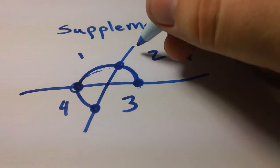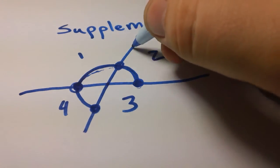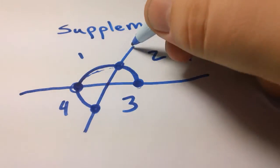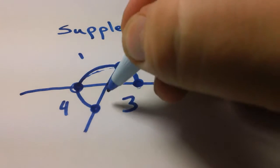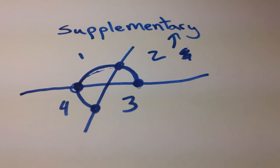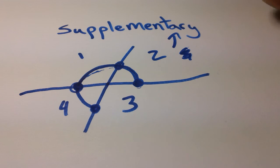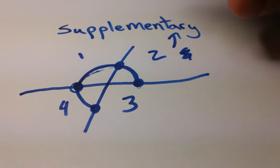So yeah, if you prefer thinking of a set of supplementary angles or a 180 degree angle as a straight line, then that works fine, or that semi-circle works as well. As I stated before, supplementary angles means two or more angles that combine to form 180 degrees.